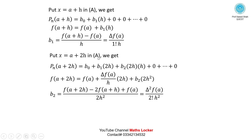Put x = a+2h in equation (A). We get Pn(a+2h) = b0 + b1·(2h) + b2·(2h)(h). Substituting the known values of b0 and b1 and simplifying, we find b2 = [f(a+2h) − 2f(a+h) + f(a)] / (2h²) = delta²f(a) / (2! · h²).